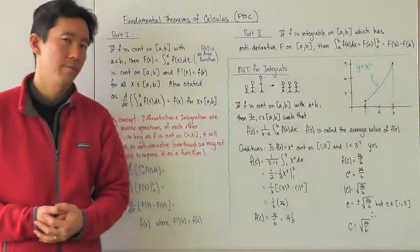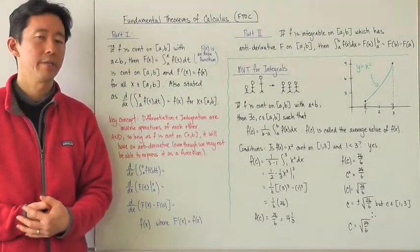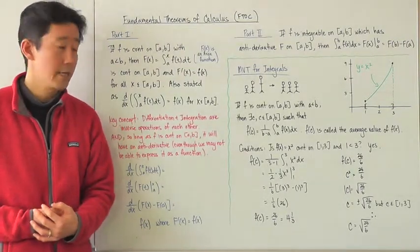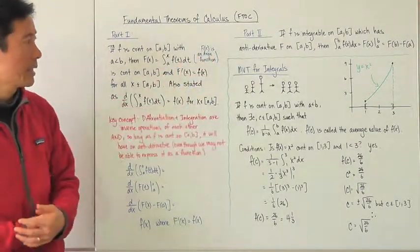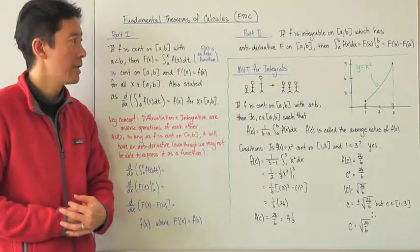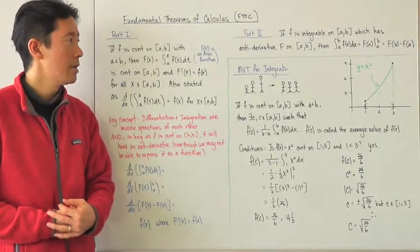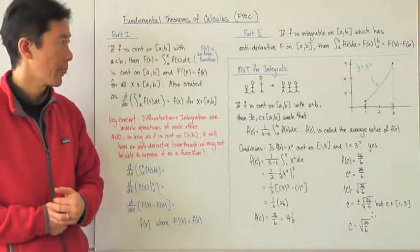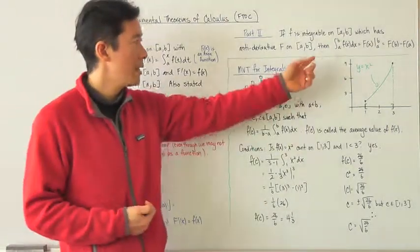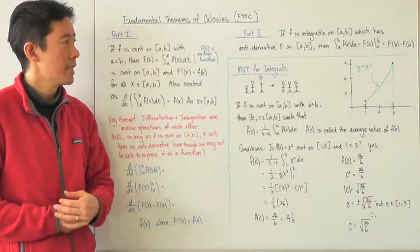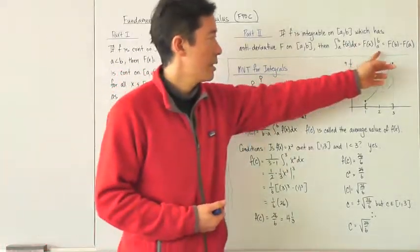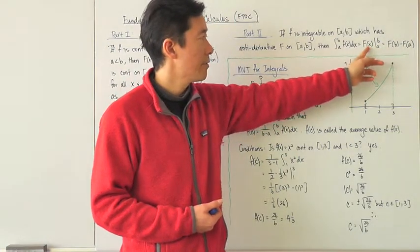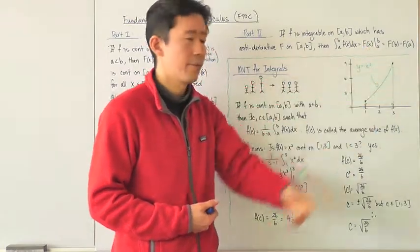Now let's go ahead and take a look at part two. Part two is something that we've already been dealing with quite a bit, so we won't necessarily look at any particular examples for that. But if f is integrable on the closed interval [a, b], which has an antiderivative capital F on the closed interval [a, b], then the definite integral can be evaluated by evaluating the capital F of x, or the antiderivative function of f of x, from a to b.